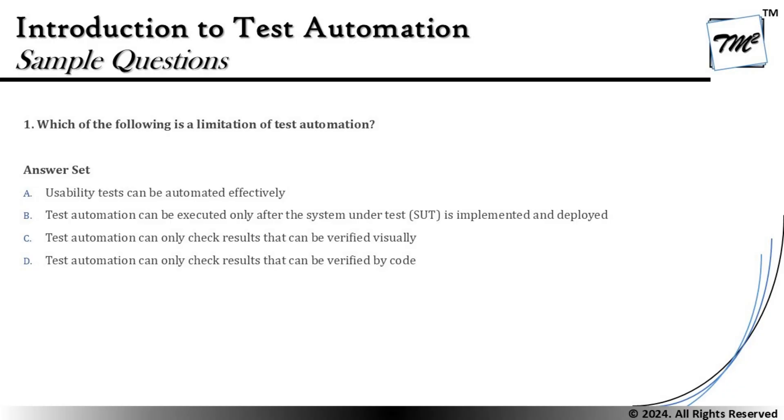Option C says: test automation can only check results that can be verified visually. Automation actually has multiple challenges related to visual comparison of images. It preferably uses code comparison — the test script compares results by passing variables with expected results, then comparing those against runtime output. So this statement does not reflect the working principle of test automation.